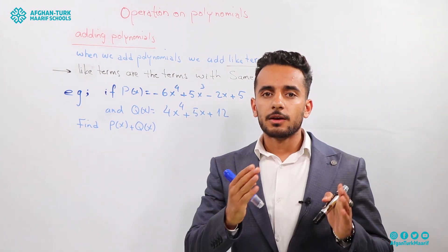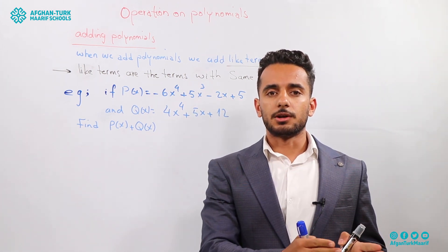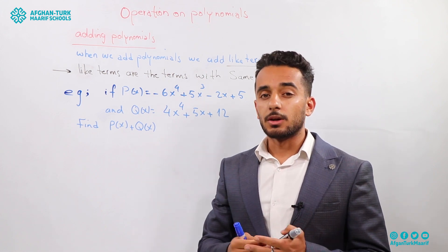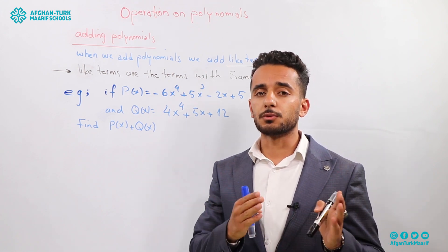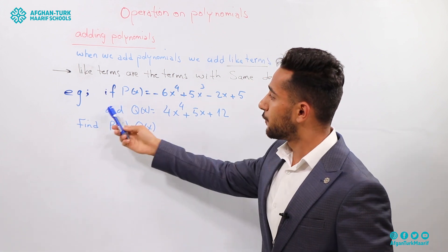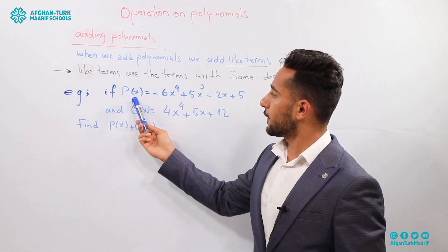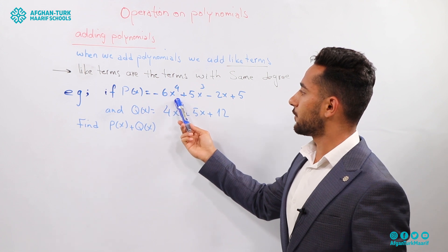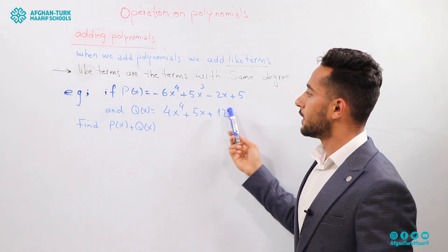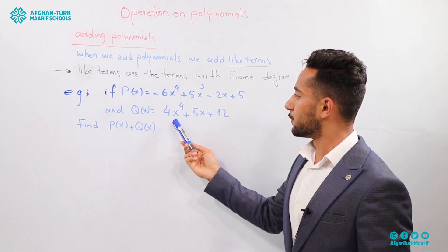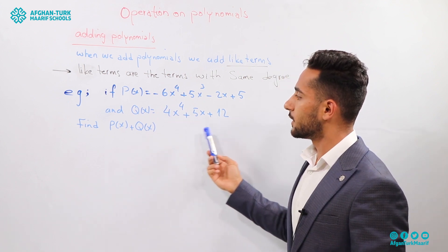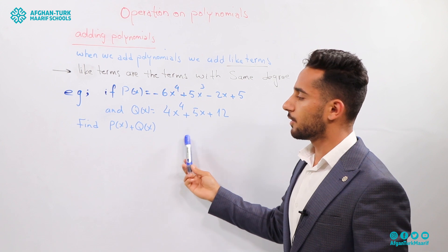It means our first term and the second term — if you are going to add them, first of all we have to check the degrees, whether the degrees are the same or not. For example, if P(x) is equal to minus x to the power of 4 plus 5x cubed minus 2x plus 5, and Q(x) is equal to 4x to the power of 4 plus 5x plus 12. Find P(x) plus Q(x).